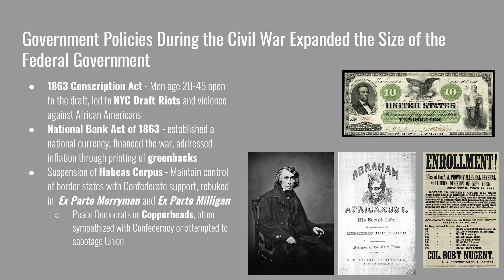We'll finish with more government policies from the Civil War that aren't referenced by the key concepts but are still very important — all part of a larger pattern of expanding the size of the federal government. The 1863 Conscription Act made men ages 20 to 45 open to the draft. It was very unpopular in the Northeast; in New York City there were draft riots and violence directed against African Americans. The National Bank Act of 1863 was passed to finance the war. It created a national currency and allowed the government to control inflation through the printing of greenbacks — when inflation was high the bank would print fewer greenbacks, and vice versa when inflation was low.